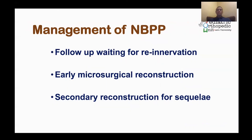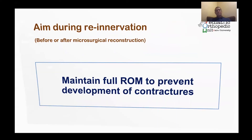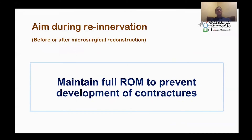Management of neonatal brachial plexus palsy consists of: follow-up waiting for re-innervation, early microsurgical reconstruction, and later secondary reconstruction for sequelae. During re-innervation — whether before or after microsurgical reconstruction — we have to maintain full range of movement to prevent contracture development, and we have to teach these range-of-motion exercises to the mother.